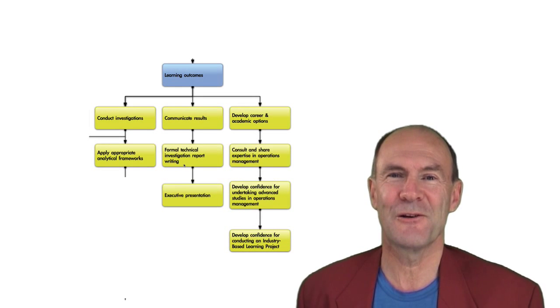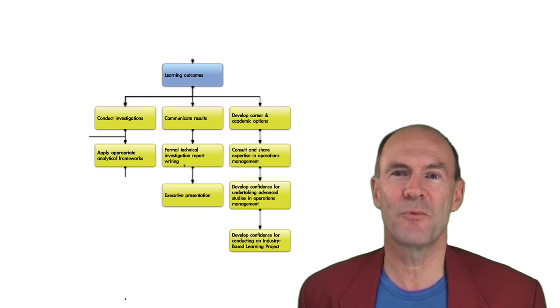What are the learning outcomes for this course, Business Process Improvement? There are four broad learning outcomes. The first learning outcome is to conduct investigations that improve business process efficiency, plan for growth and so forth.